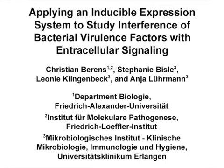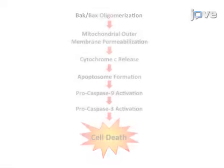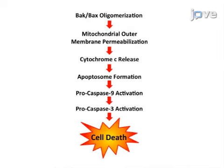The overall goal of the following experiment is to study interference of bacterial virulence factors with intracellular signaling. This is achieved by establishing stable cell lines expressing the protein of interest to study its activity on bulk cell level. As a second step, an inducible expression vector system is created, which allows activating a host cell signaling cascade at a defined step.